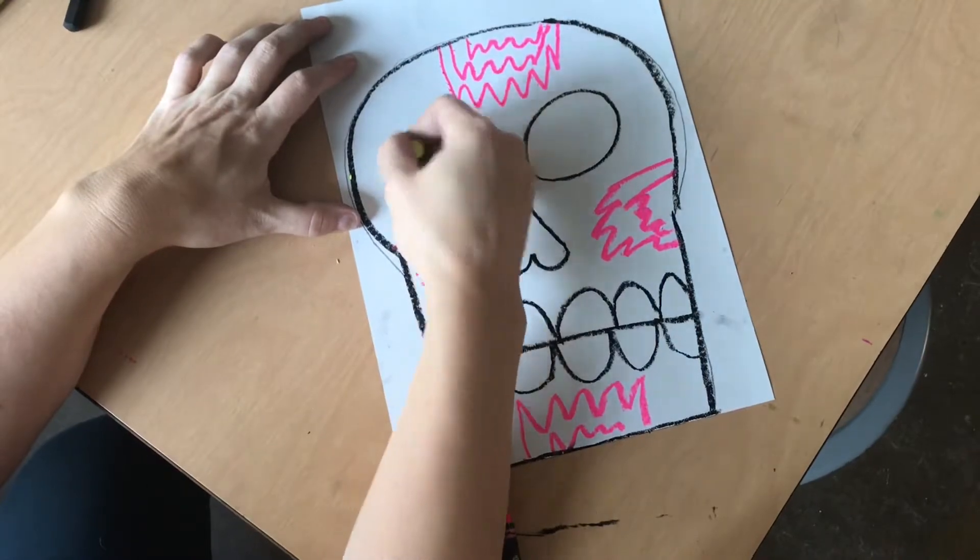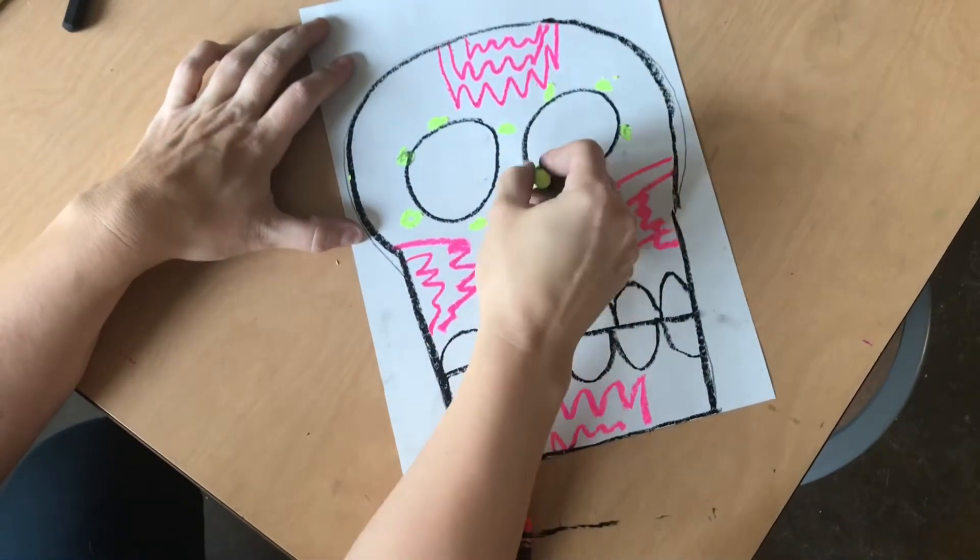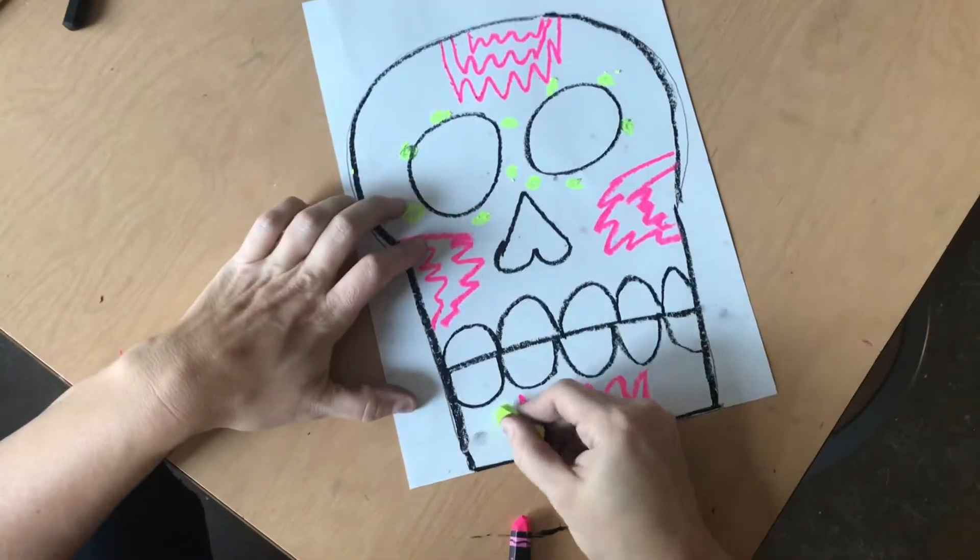You might do some dots. You might do some stripes. All sugar skulls look very different and very colorful.